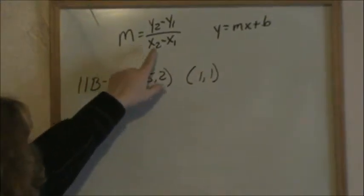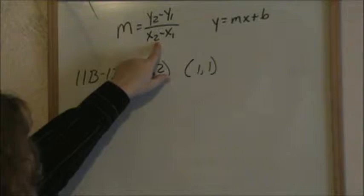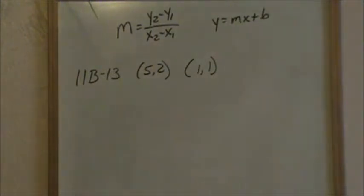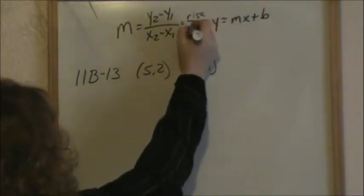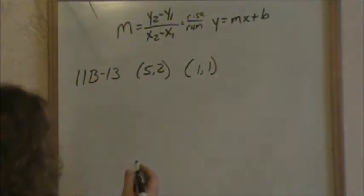To find the slope, this is your equation to find the slope: y2 minus y1 over x2 minus x1, because slope is rise over run and your rise is your y's and your x's is your run.